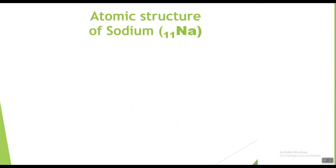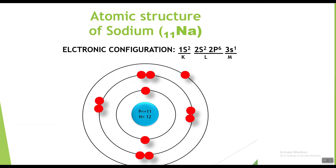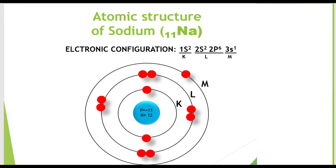Now sodium. The symbol for sodium is Na with atomic number 11, showing it has eleven electrons. The electronic configuration of sodium is 1s2 2s2 2p6 3s1. The K shell cannot accommodate more than two electrons and the L shell cannot accommodate more than eight electrons, so the remaining electrons go to the higher energy shell. The atomic structure of sodium shows eleven protons and twelve neutrons in the nucleus, with eleven electrons around the nucleus: two in the K shell, eight in the L shell, and one in the M shell.